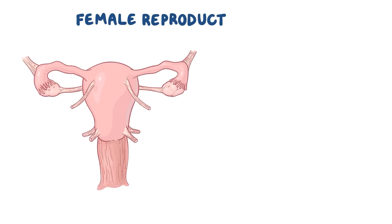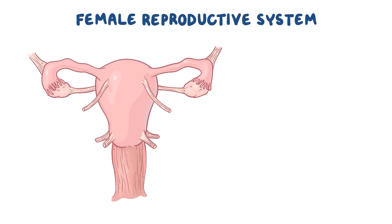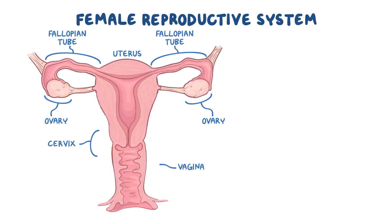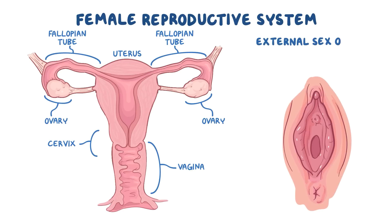The female reproductive system includes all of the internal and external organs that help with reproduction. The internal sex organs are the ovaries, which are the female gonads, the fallopian tubes — two muscular tubes that connect the ovaries to the uterus — and the uterus, which is the strong muscular sac that a fetus can develop in. The neck of the uterus is called the cervix, and it protrudes into the vagina. At the opening of the vagina are the external sex organs, usually just called the genitals, and they're in the vulva region.